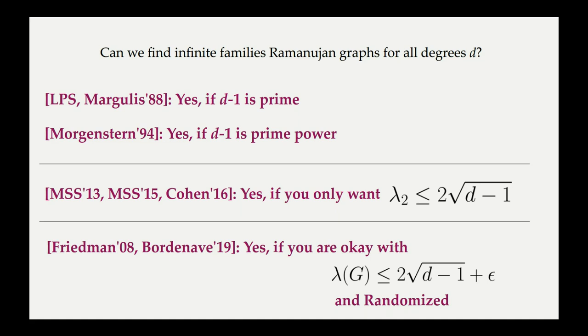This is graphs where we only bound the second largest eigenvalue. Finally, it was first conjectured by Alon, proved by Friedman, and then simplified by Bordenave, that uniformly random d-regular graphs are near-Ramanujan with high probability. This means epsilon close to Ramanujan. So the answer is yes if we allow randomness and are satisfied by near-Ramanujan-ness. Our result is essentially a deterministic version of this.